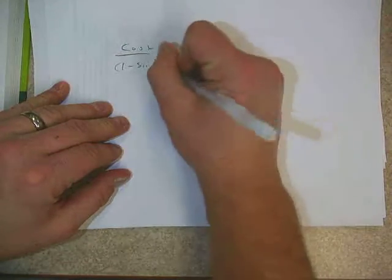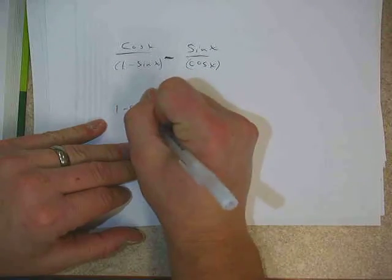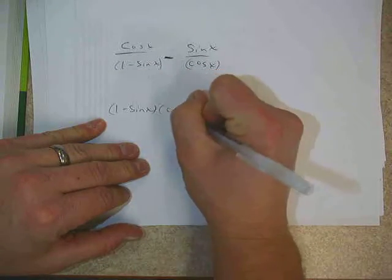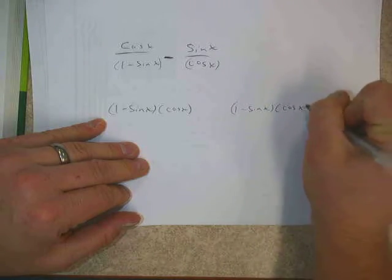In this case, if I look at the denominators here, I have 1 minus sine x and I have cosine x. Therefore, the common denominator is going to be 1 minus sine x times cosine x. So those two together will be the common denominator.